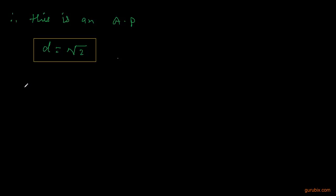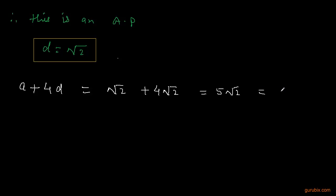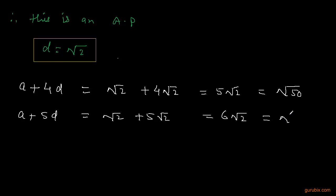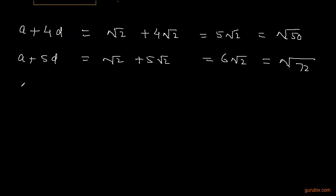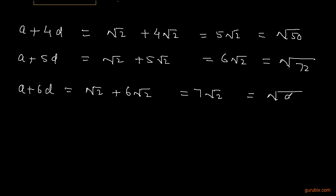The fifth term is a + 4d = √2 + 4√2 = 5√2, which can also be written as √50. The sixth term is a + 5d = √2 + 5√2 = 6√2, written as √72. The seventh term is 7√2, written as √98. So our next three terms are √50, √72, and √98.